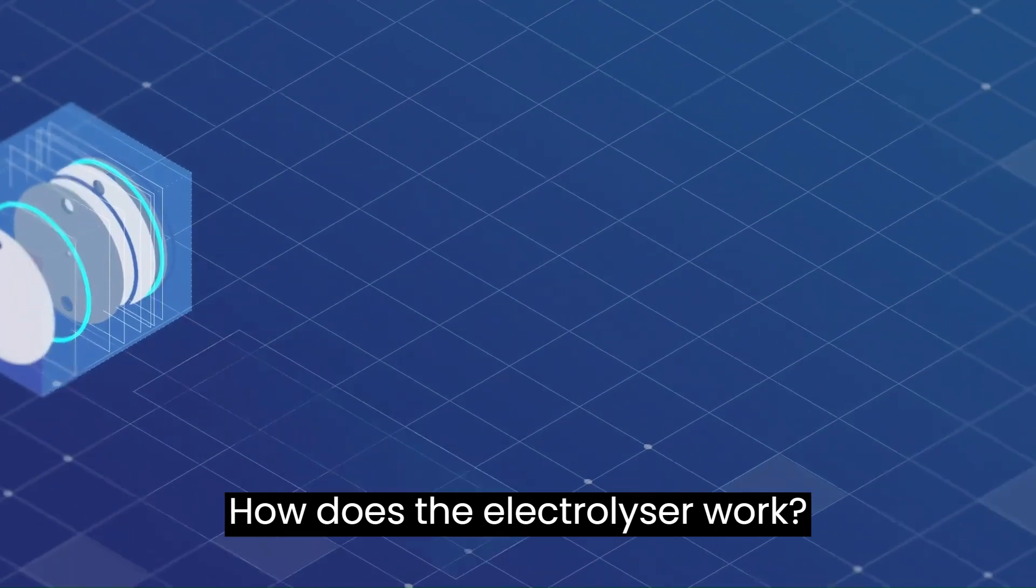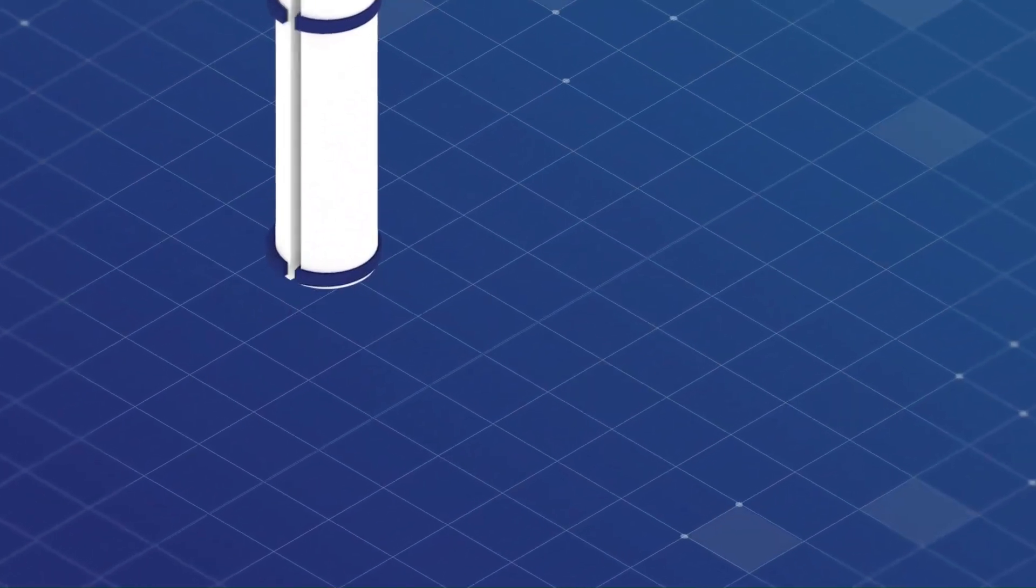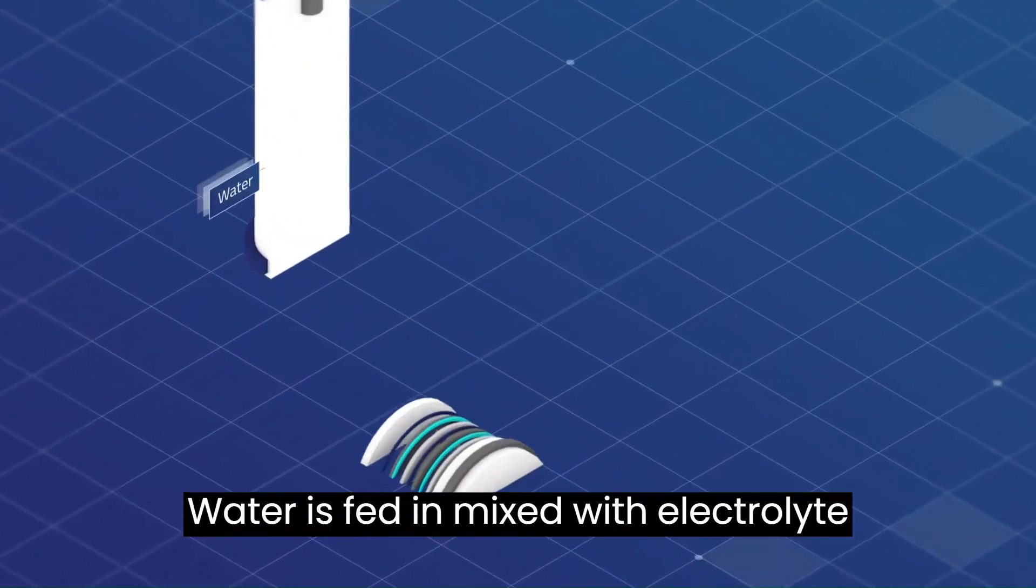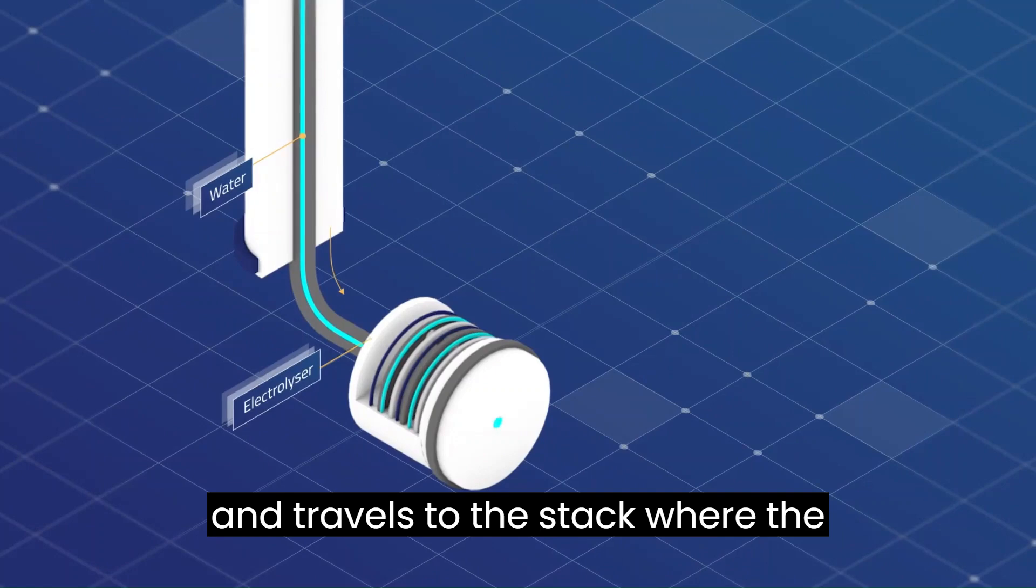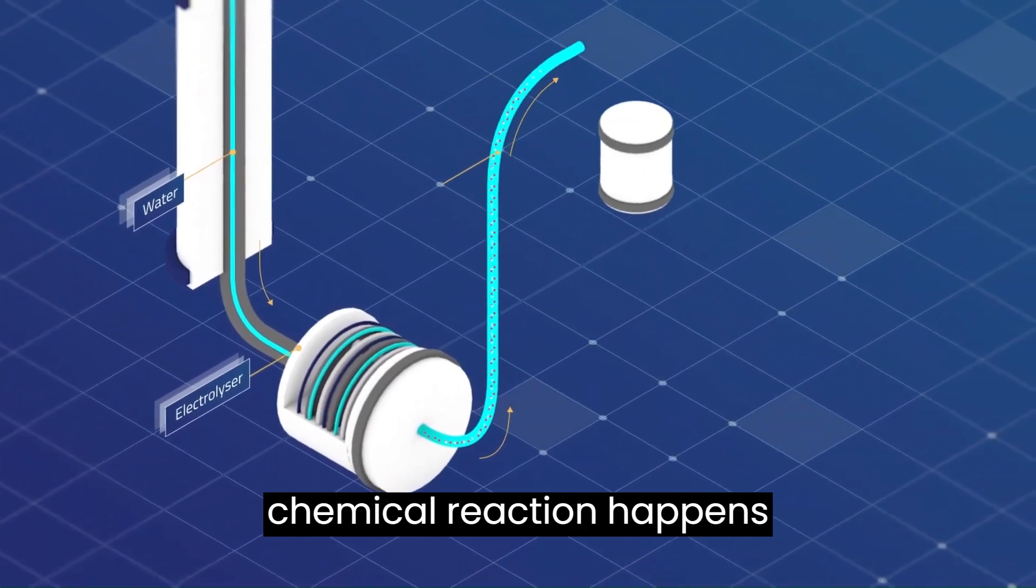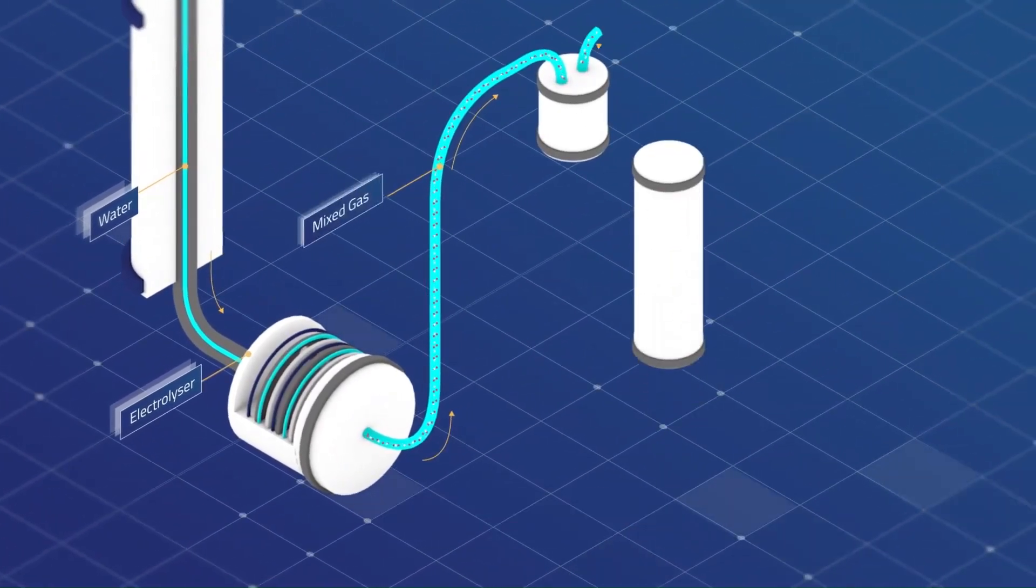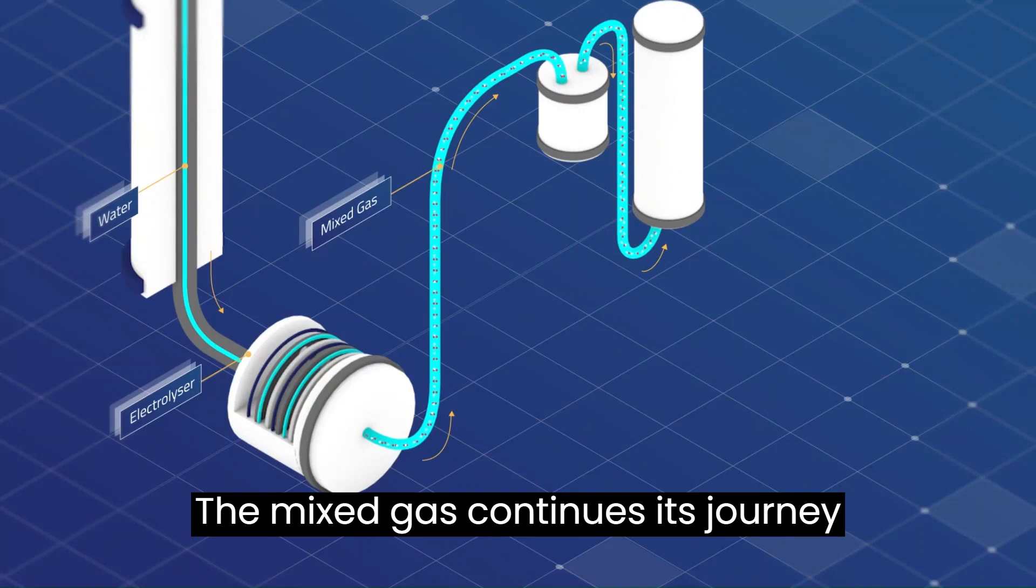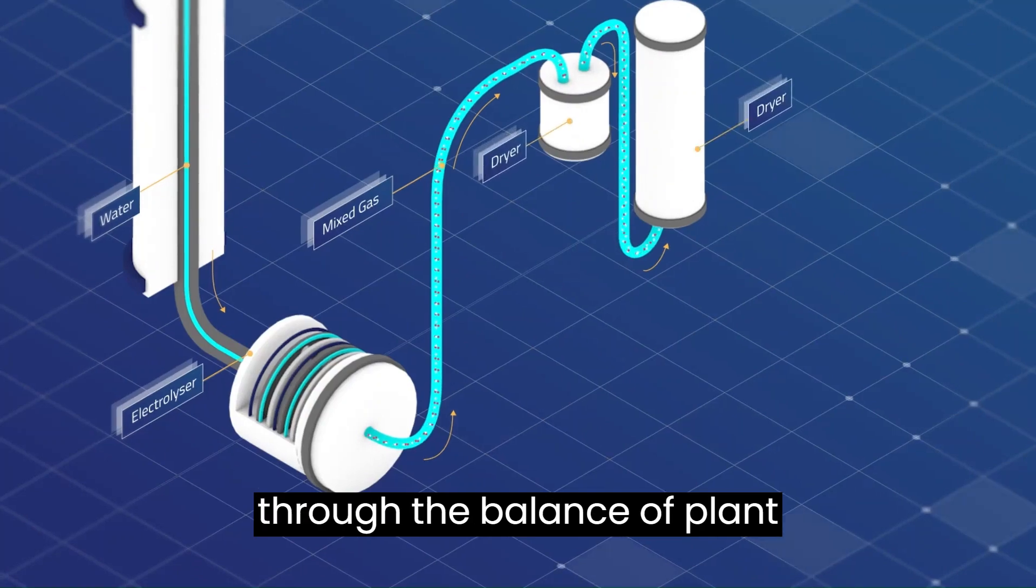How does the electrolyzer work? Water is fed in, mixed with electrolyte, and travels to the stack where the chemical reaction happens and the gas is generated. The mixed gas continues its journey through the balance of plant to the dryers.